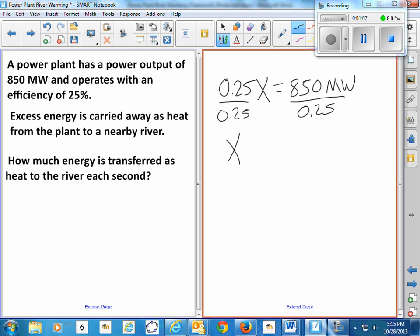The total is equal to 3,400 megawatts. If we subtract the 850 that was useful electrical energy, that equals 2,550 megawatts.